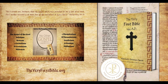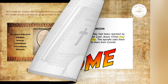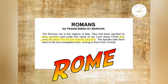Okay, with that generous helping of context, let us now read the rest of the prologues. See if you can spot a recurring theme in many of them. After Galatians, we turn to Romans. Quote: 'The Romans are in the regions of Italy. They had been reached by false apostles, and under the name of our Lord Jesus Christ, they were led away into the law and the prophets. The apostle calls them back to the true evangelical faith, writing to them from Corinth.' Unquote. Now Corinthians — quote: 'The Corinthians are Achaeans, and they similarly heard from the apostles the word of truth, and then were subverted in many ways by false apostles,'